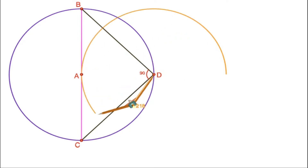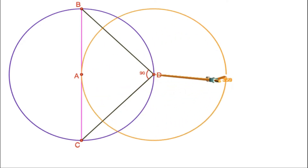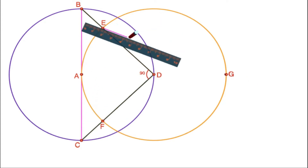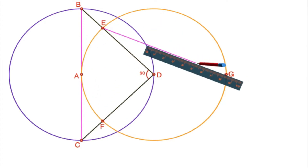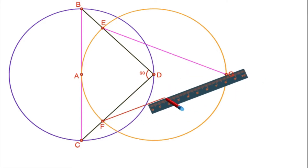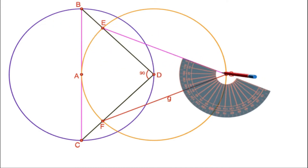Now draw a circle with center D and mark the points of intersection of the circle with the sides of the angle. Let them be E and F. Join E and F to a point G on the alternate arc of this small arc EF. Then angle G is 45 degrees.